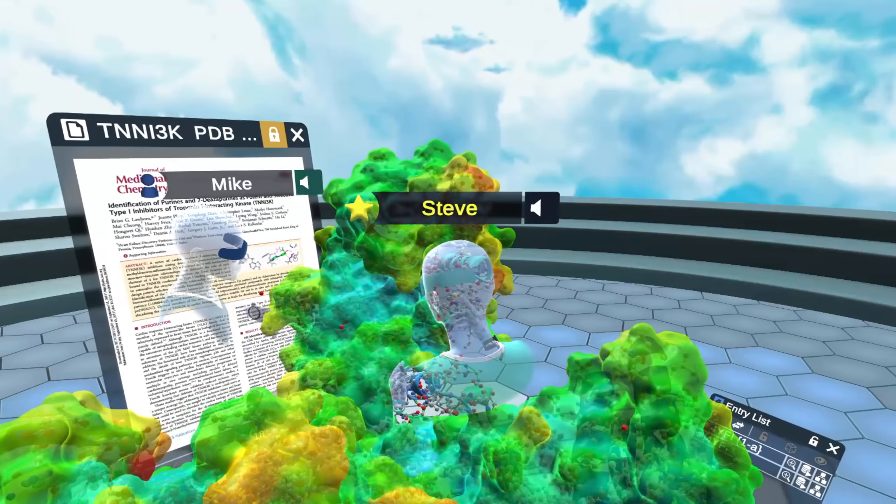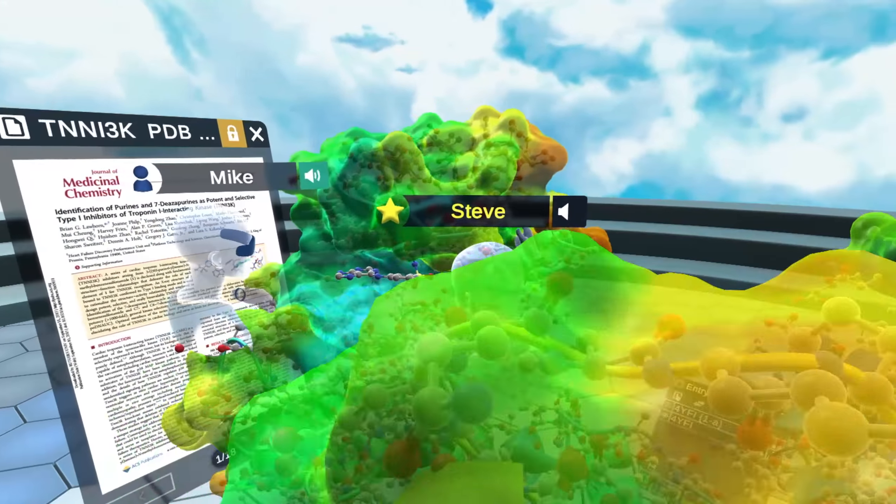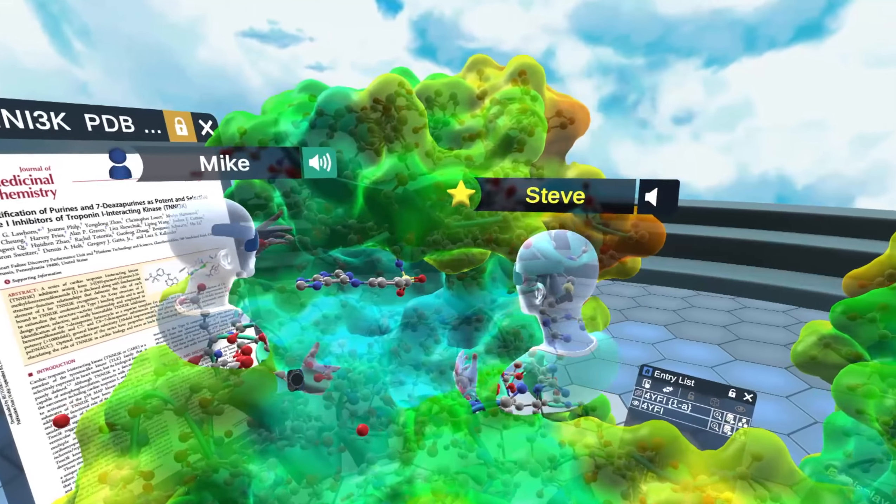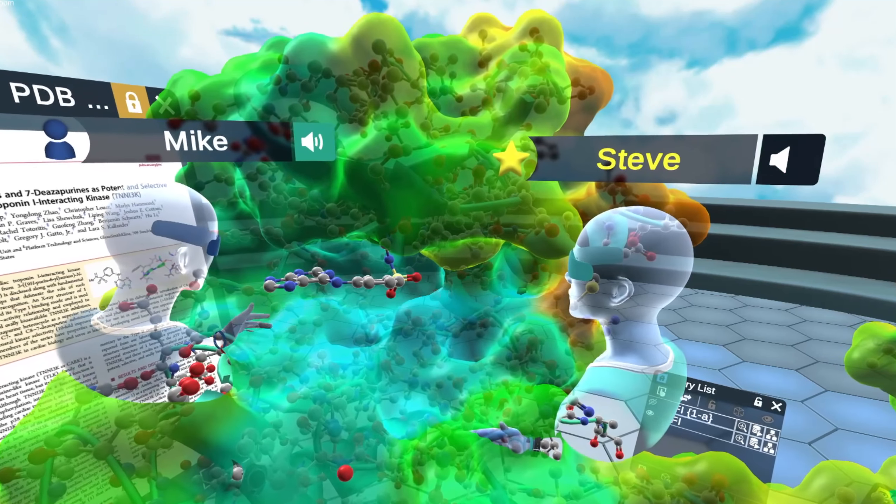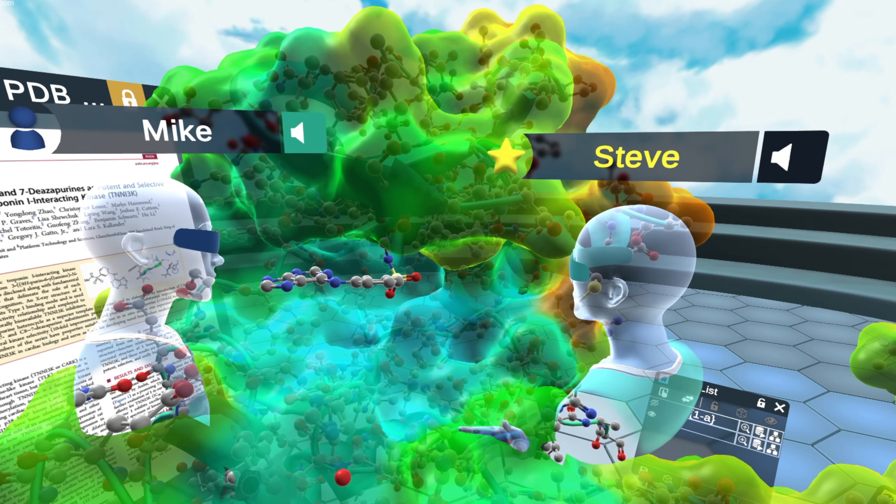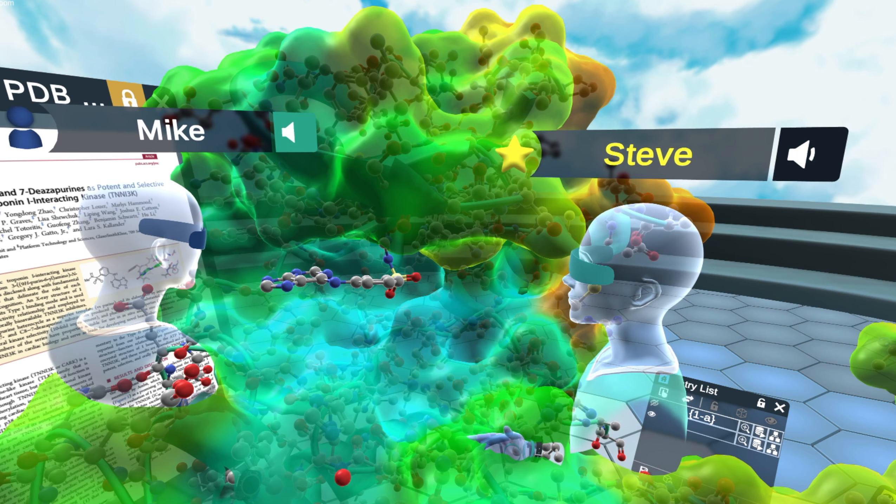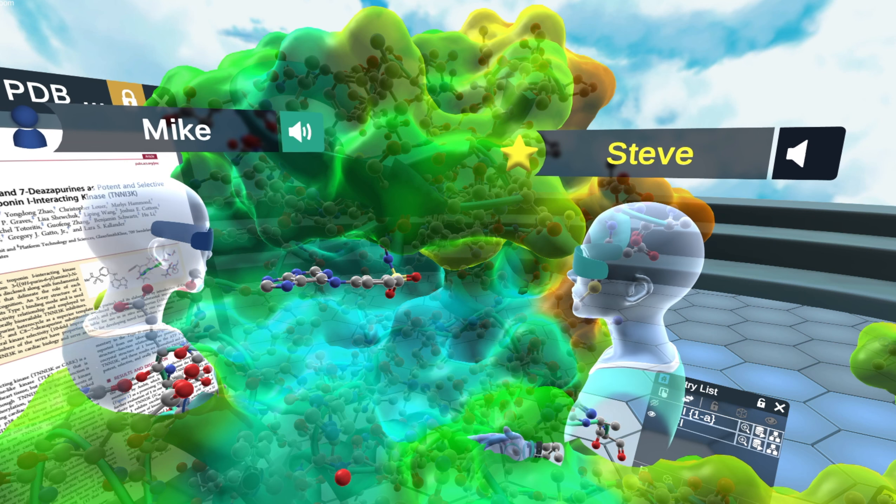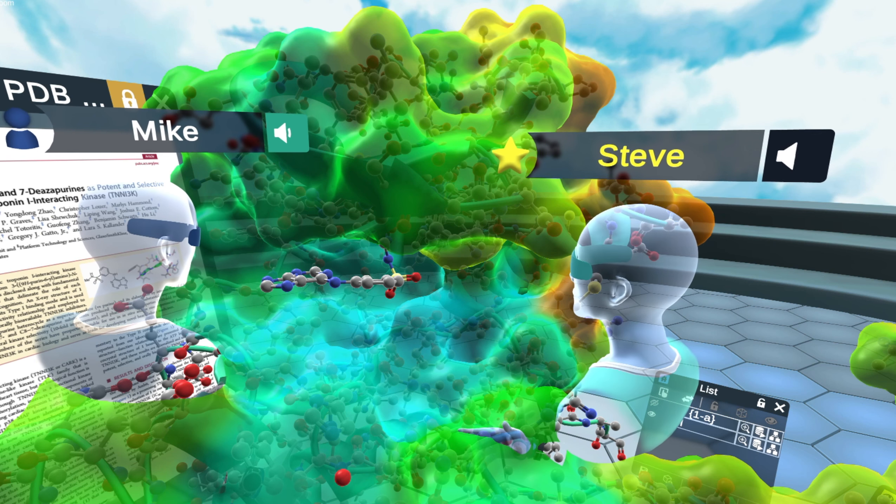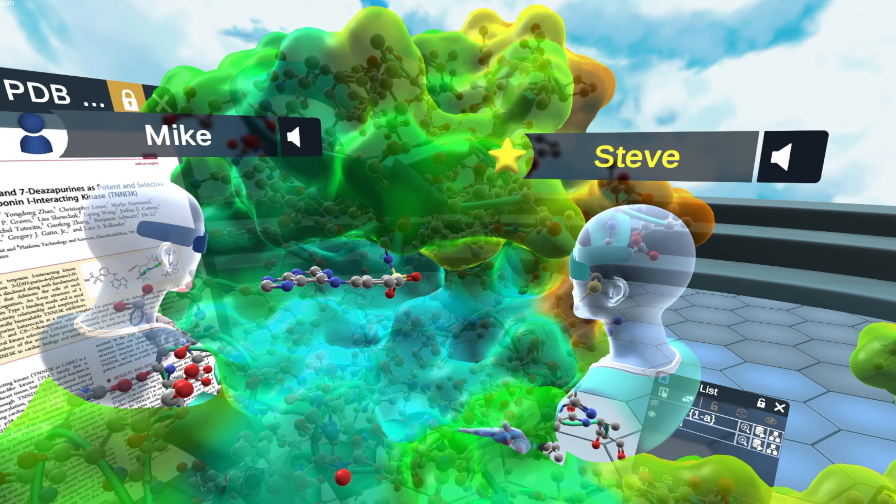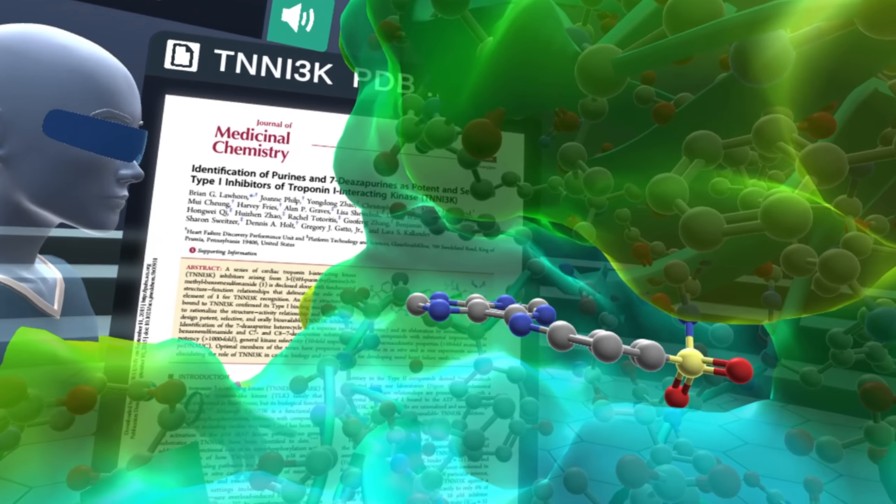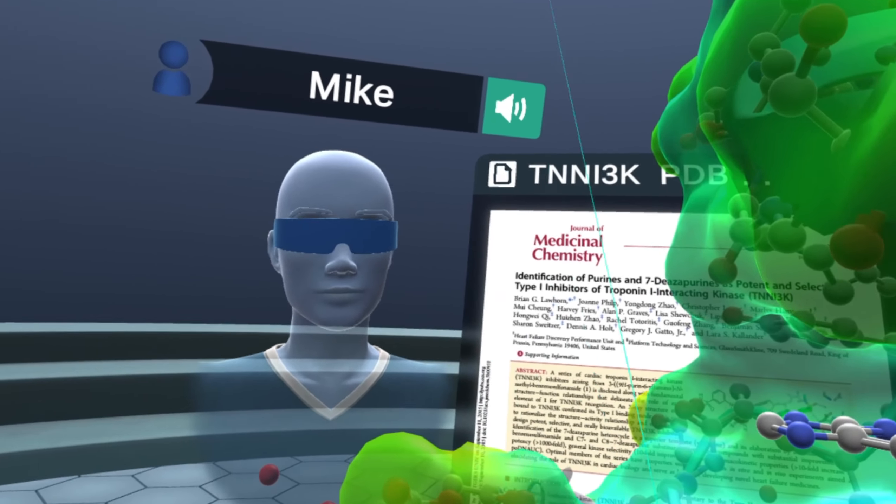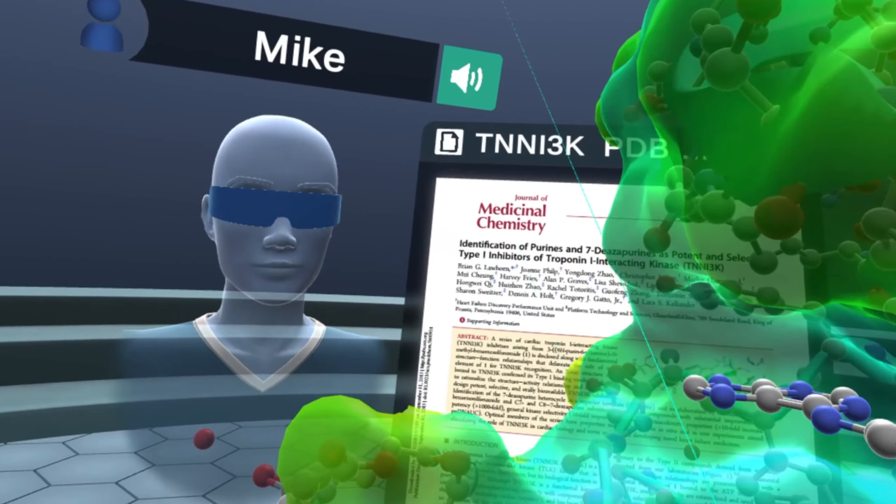So a kinase basically has two lobes, two domains, and in between is a hinge region. And in this cleft is where ATP usually binds. And so what we see here is the actual inhibitor, the HIT molecule that was found from a screen by the scientists at GSK. And we can come right here in virtual reality into the active site and look at some of the key interactions that this ligand picks up with the kinase.